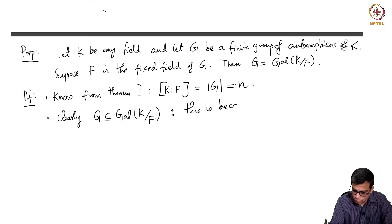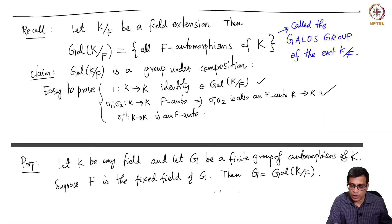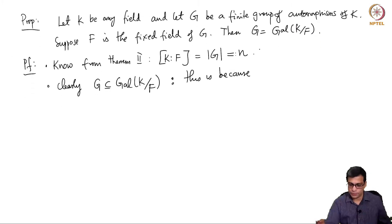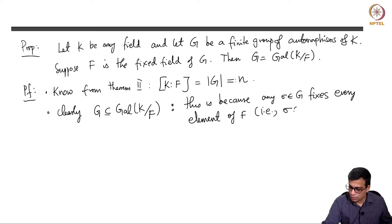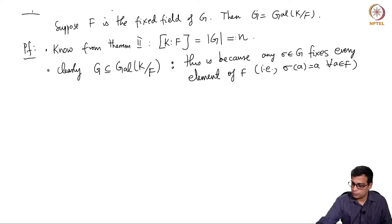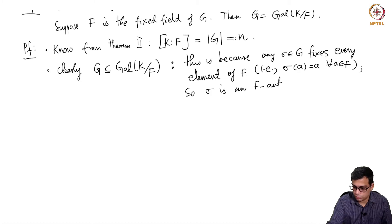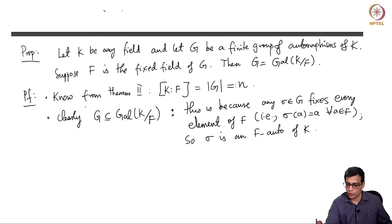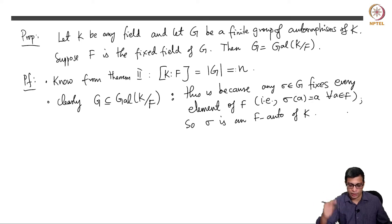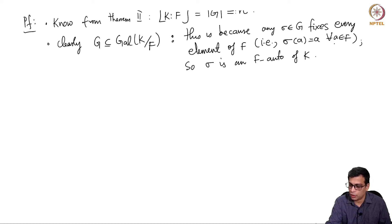The Galois group of K over F consists of all F-automorphisms of K. Any σ in G fixes F by definition, because F is the fixed field — σ(a) = a for all a in F. So σ is an F-automorphism, which means every element of G is in Gal(K/F). That is, G ⊆ Gal(K/F).